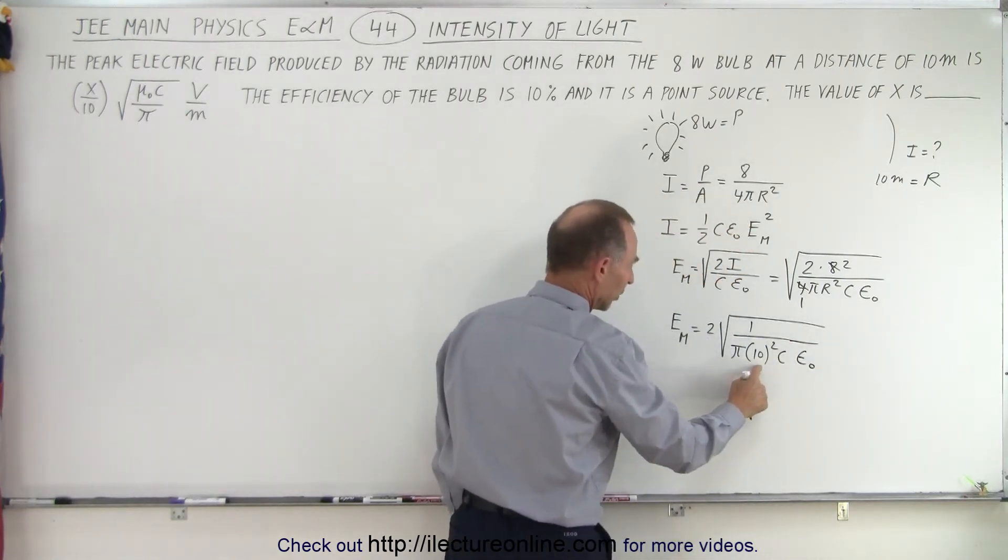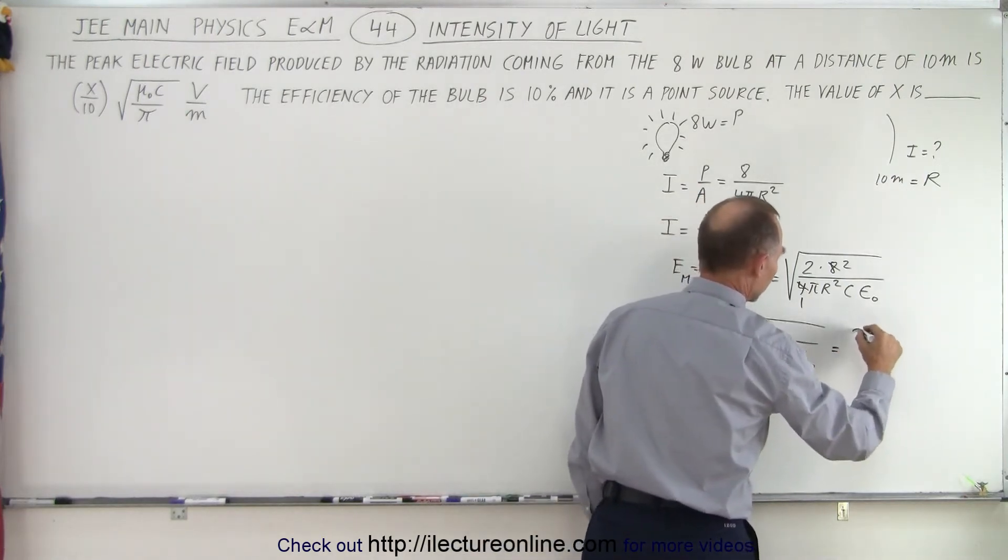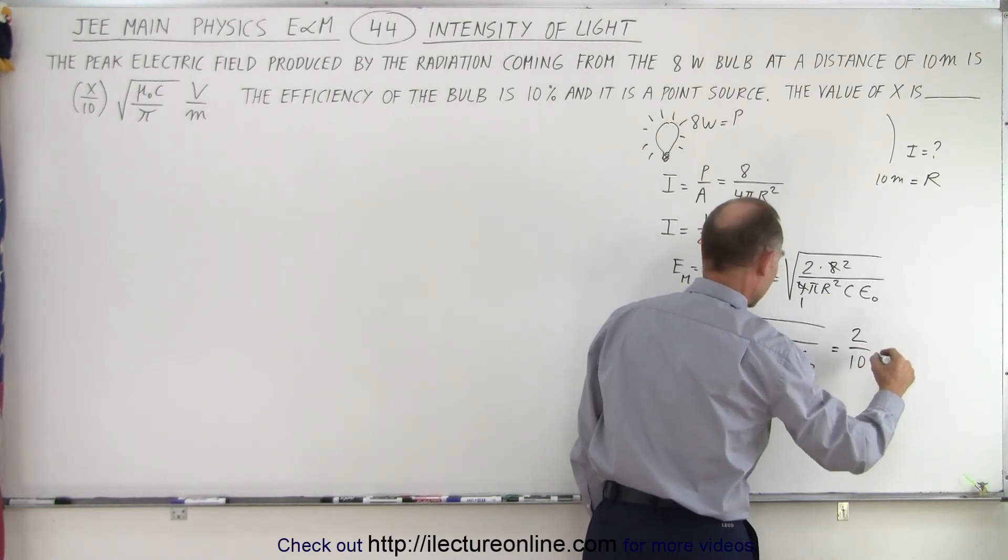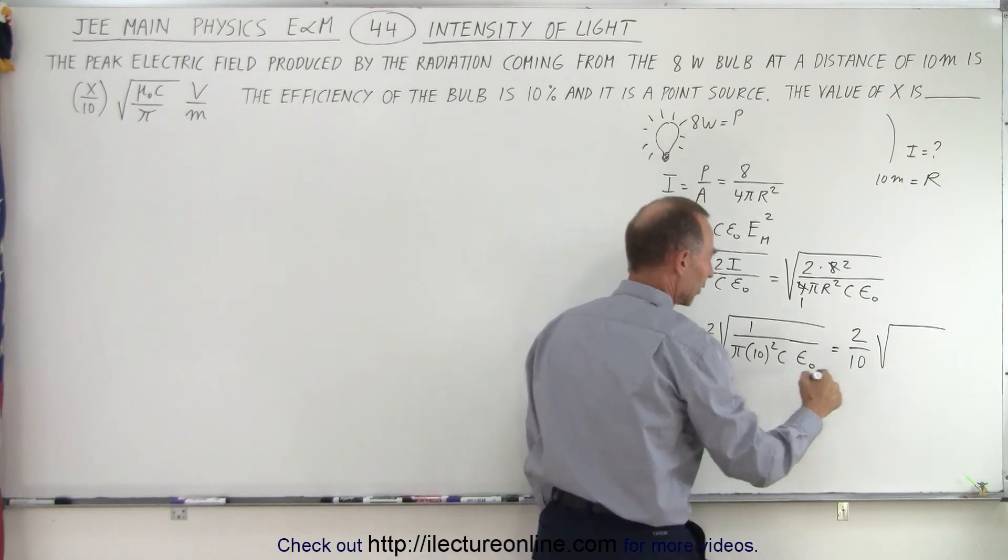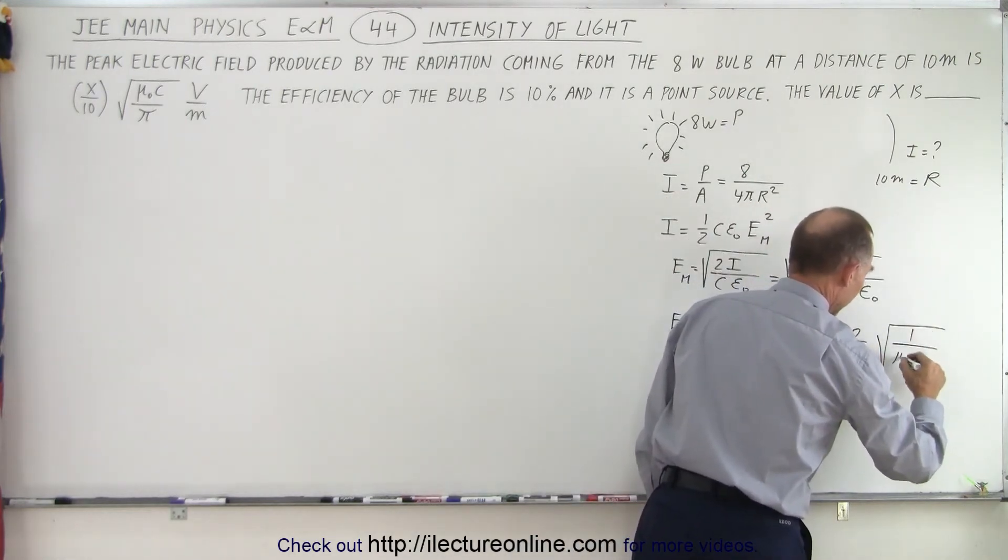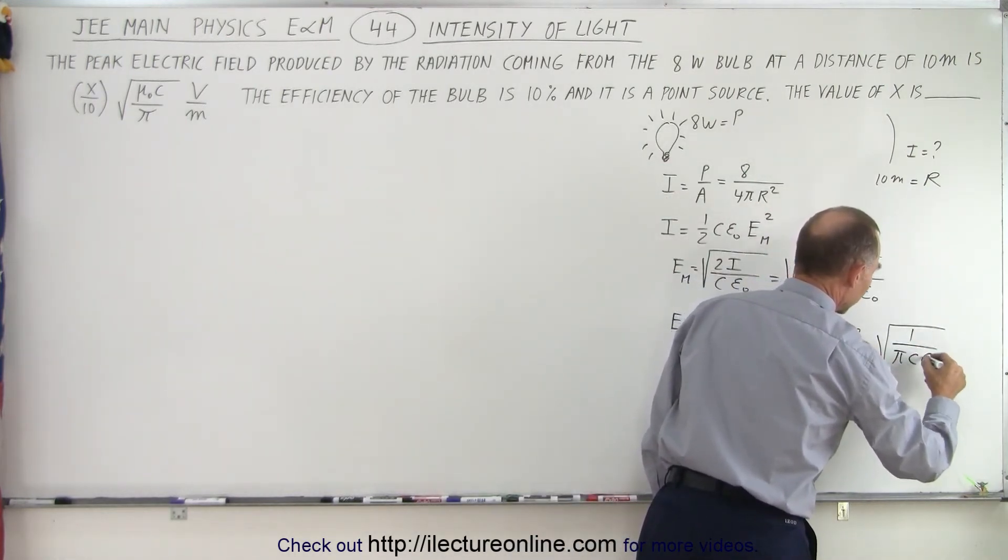And then notice I can pull the 10 out, and so this becomes 2 divided by 10 times the square root of, and we're remaining with a pi c and epsilon sub naught. So 1 over pi c epsilon sub naught.